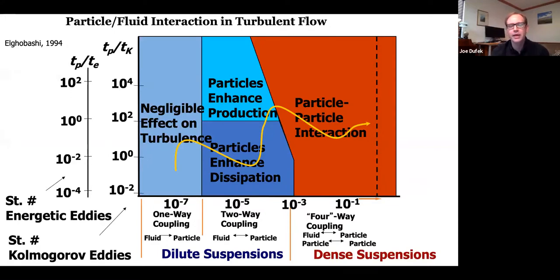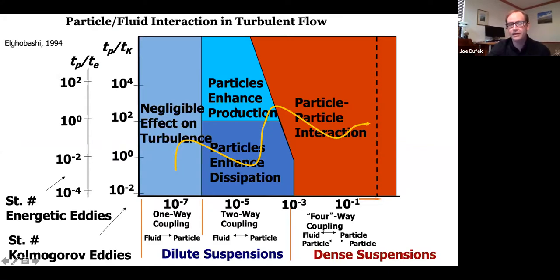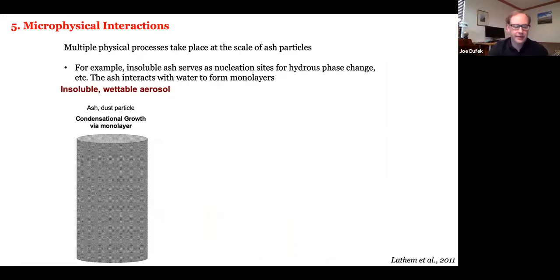Two-way coupling is another largely unexplored effect in volcanic contexts: particles can influence turbulence itself. At dilute concentrations, particles don't affect background turbulence much. At moderate concentrations, large Stokes number particles can enhance turbulent production, changing the energy cascade, while small particles can dissipate energy from small-scale eddies. This could potentially affect parts of volcanic plumes all the way through to the fall deposit.